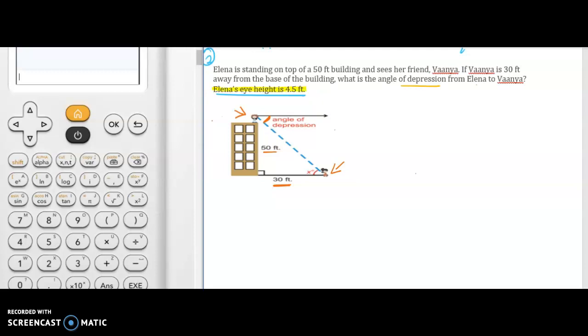But one important piece of information is this. Alina's eye height is 4.5. So when we are considering the height, the total height, we are not only considering the height of the building but we also need to take into account this height 4.5 which is the eye level of Alina. So in this case, the total height will be 50 plus 4.5 and it will be 54.5.